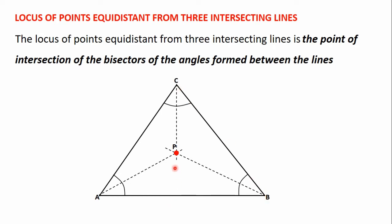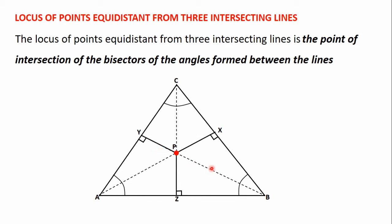Now let's assume that we draw a perpendicular line from point P to the line BC, then another perpendicular line from point P to the line AC, and finally another perpendicular line from point P to the line AB. Let's call these points X, Y, and Z respectively. Because point P is the point of intersection of the three bisectors, the perpendicular lines drawn from point P to all three lines will have the same length. So the length PY equals PX, and it also equals PZ.